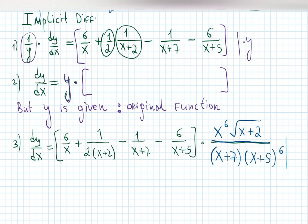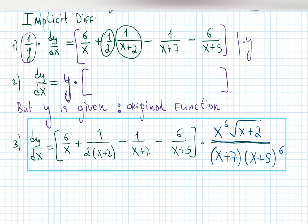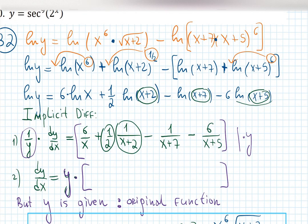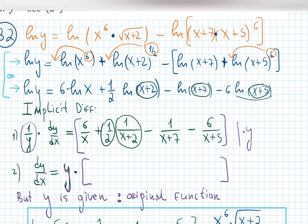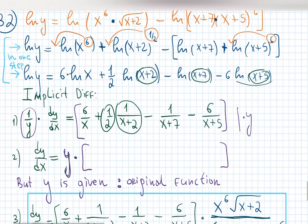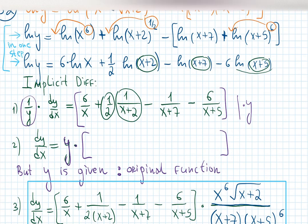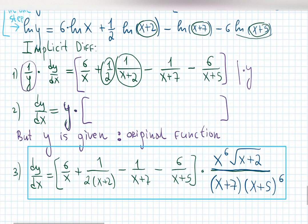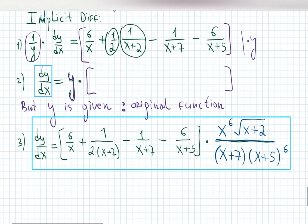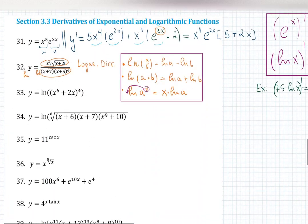It seems like many steps, but actually we applied log to both sides, used properties of log to simplify as much as possible — and those simplification steps can be done all at once if you've mastered log laws. I'm challenging you to do it in one step. Then you apply implicit differentiation: differentiate both sides, the left-hand side is always ln(y) giving 1 over y times dy/dx, and the last step is always multiplying by y to isolate dy/dx.